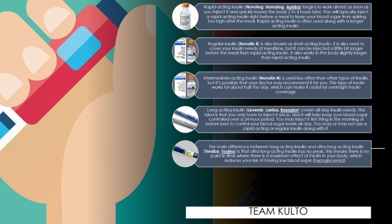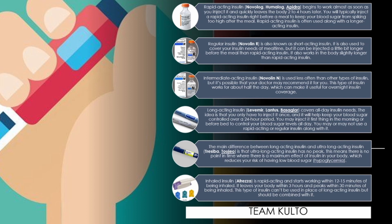Next, you have your ultra-long-acting insulin. The main difference between long-acting insulin and ultra-long-acting insulin — Tresiba and Toujeo — is that ultra-long-acting insulin has no peak. This means there is no point in time where there is a maximum effect of insulin in your body, which reduces your risk of having low blood sugar, or hypoglycemia. Lastly, we have inhaled insulin — AFREZZA. This is rapid-acting and starts working within 12 to 15 minutes of being inhaled, leaves your body within 3 hours, and peaks within 30 minutes. This type cannot replace long-acting insulin but should be combined with it.